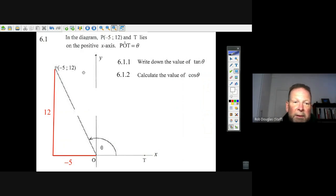They give us this diagram, they just give us the point minus 5 and 12, 5 to the left and 12 up. Now, there's this point T on the positive x-axis, and here we go, POT, this big angle here is called beta.